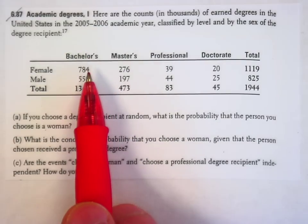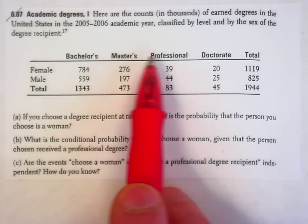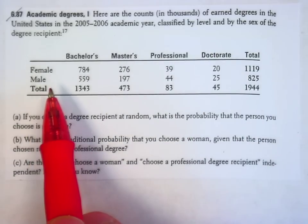They are classified by the degree level, bachelor's, master's, professional, doctorate, and then the gender of the degree recipient, female and male.